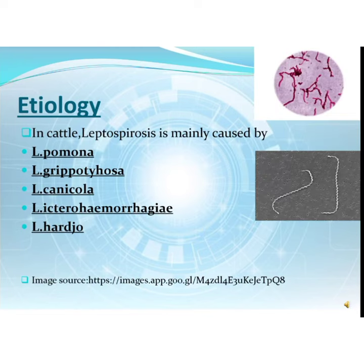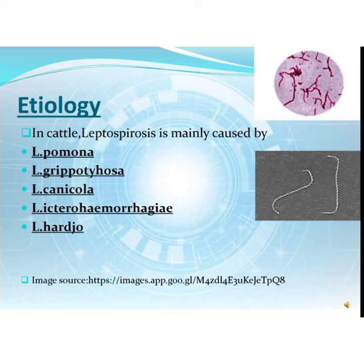Now, etiology. In cattle, Leptospirosis is mainly caused by Leptospira Pomona, Leptospira Grippotyphosa, Leptospira Canicola, Leptospira Icterohaemorrhagiae, and Leptospira Hardjo. These are characteristically coiled or spiral-shaped filamentous organisms with hooked ends, and are actively motile due to flexibility, having characteristic corkscrew-like motility, as shown in the picture.